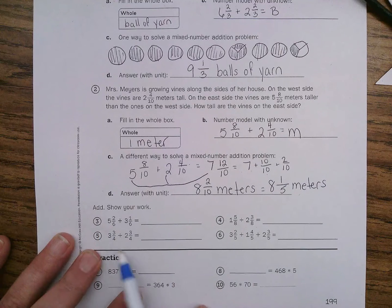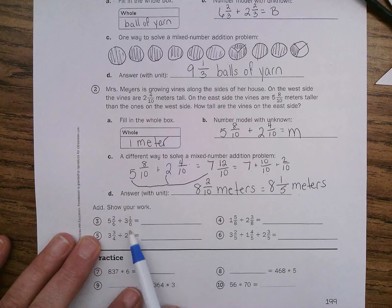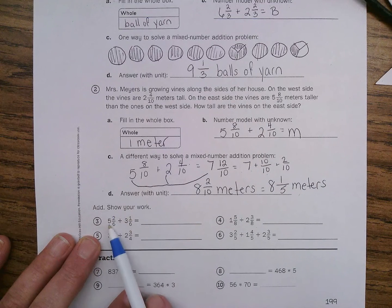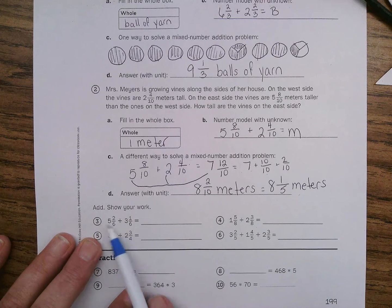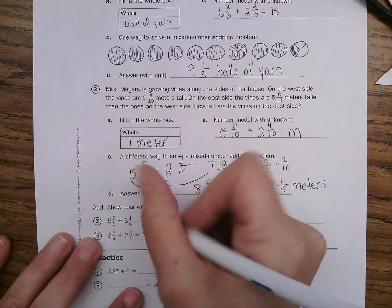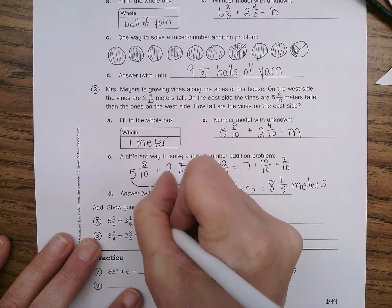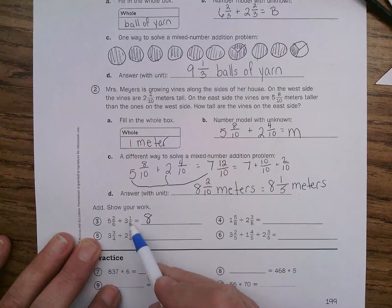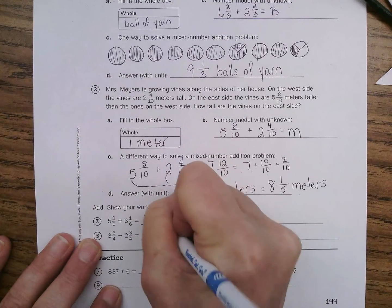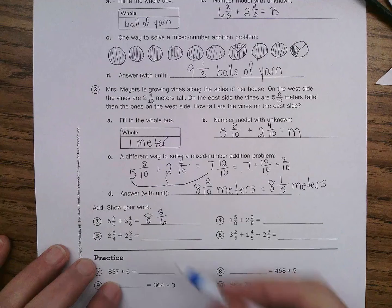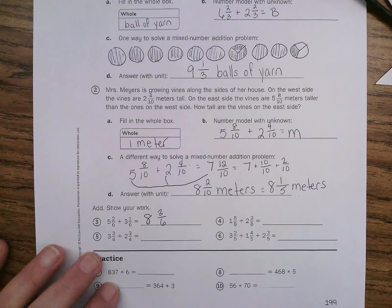So, alright. Add. Show your work. Five and two-sixths plus three and one-sixths. So, let's add the whole numbers first. Five plus three. Five plus three is eight. Two-sixths plus one-sixths is three-sixths. Oh, someone's knocking on the door.